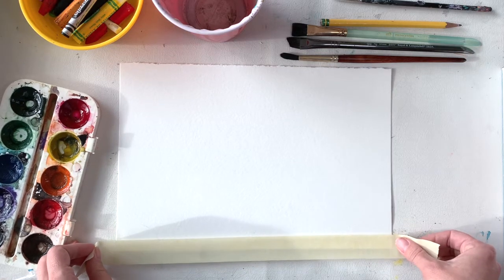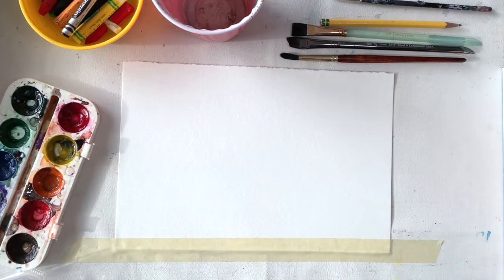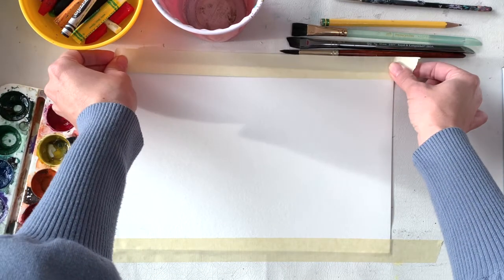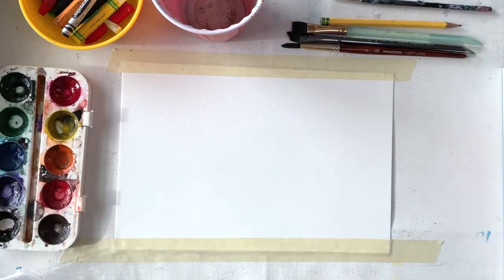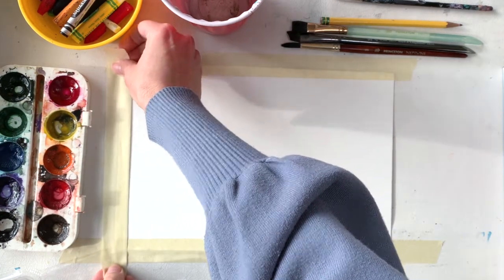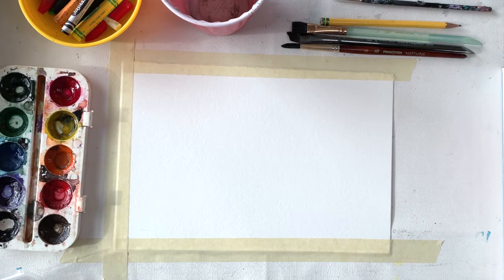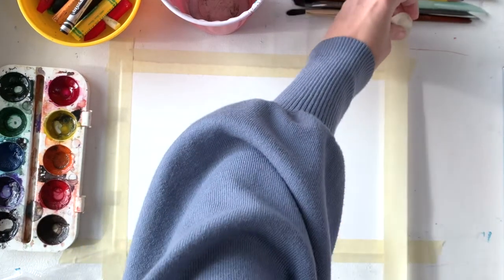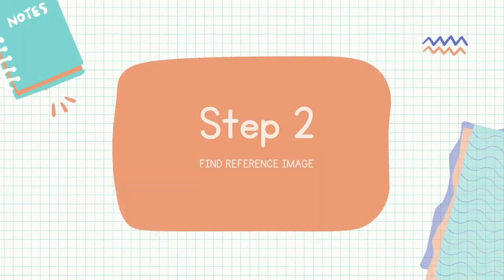I'm going to show you how to tape down your paper. Watercolor artists will sometimes tape their paper to their work surface, whether that's a board or a table. The purpose of this is to give you a nice little white border and also to make sure your paper doesn't buckle and wrinkle from having too much water on it. This is an optional step. One thing to note is that once you start taping your paper down, you won't be able to move it, so tape it somewhere you can leave it for the whole duration of the project.